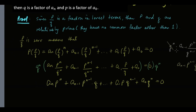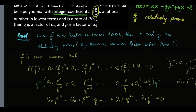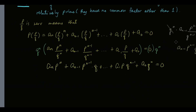Now we need to prove that Q is a factor of a_n. What we are going to do — if you want to put a reason for each step — we multiplied everything by Q^n, so the reason is by the multiplication property of equality.